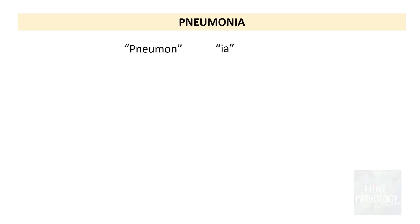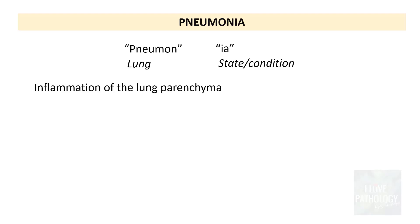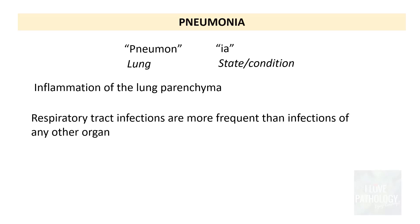The word pneumonia is derived from the Greek words 'pneumon' and 'ia'. Pneumon means lung, and 'ia' is a suffix meaning a state or condition. So basically, pneumonia is a condition of the lung — specifically, inflammation of the lung parenchyma. By definition, pneumonia is the inflammation of lung parenchyma.